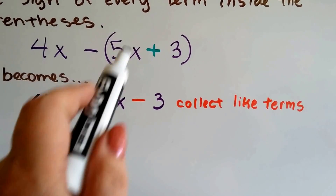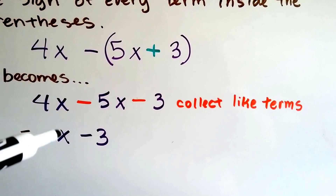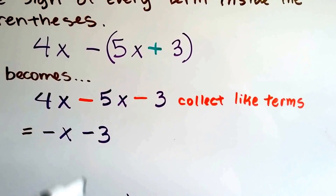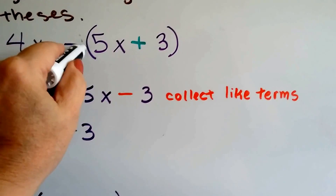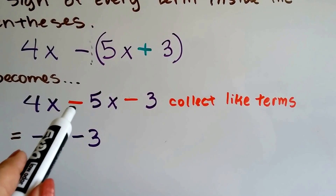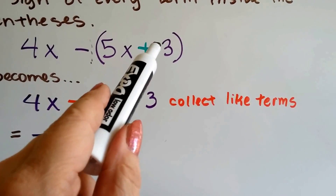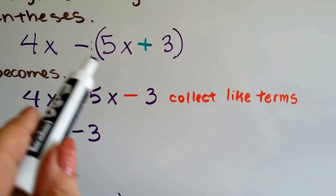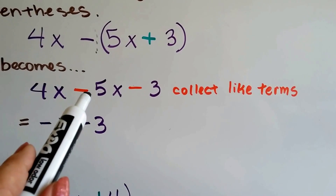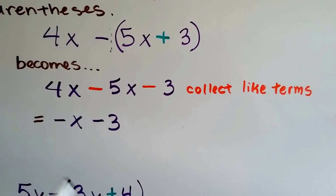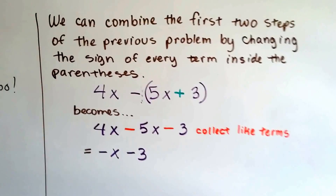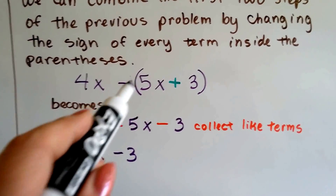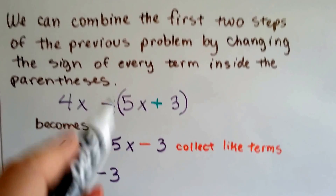We distribute this negative sign to each of the terms inside the parentheses. The inverse of a sum property says we can just switch the signs inside the parentheses. There's an invisible 1 there, so it's like saying negative 1 times 5x, which gives us negative 5x, and negative 1 times positive 3 gives us negative 3. By this negative sign being there, it switched all the signs on the inside — positive 5x became negative, and positive 3 became negative 3. We collect like terms: 4x minus 5x is negative x minus 3. We got rid of all that confusion just by changing the sign of every term inside the parentheses because of the minus sign in front, and knowing the property of negative 1.